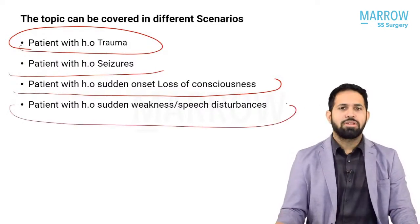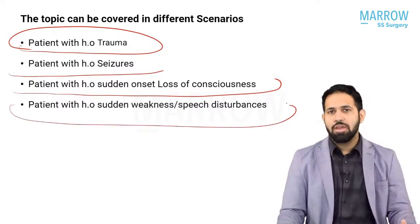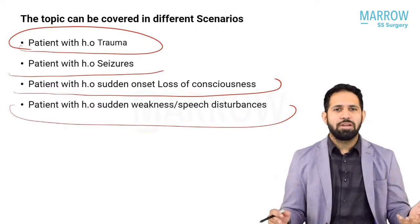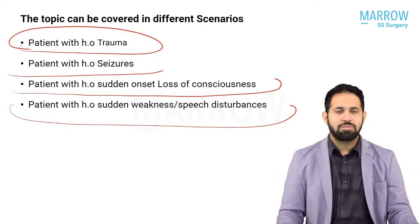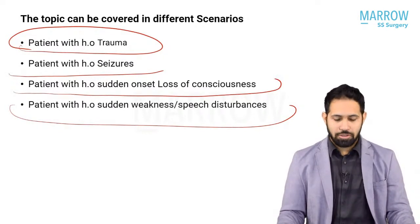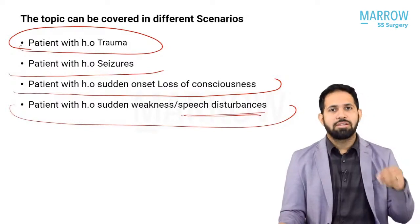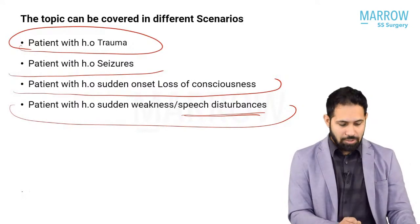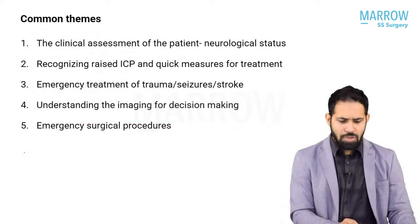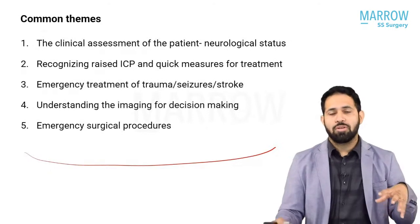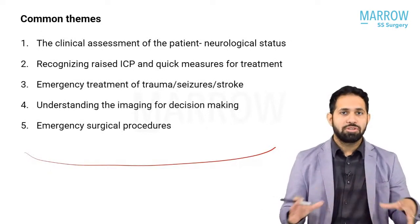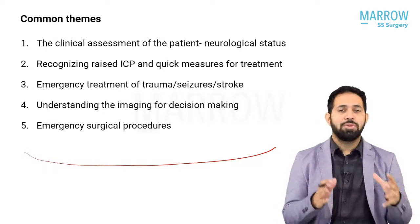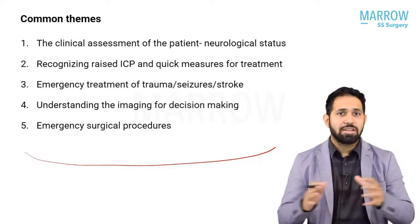Finally, you will have a patient with a classic history of what seems like a stroke: slurring of speech, weakness of one side of the body, speech disturbances, or global aphasia. The common theme among all these patients is what you do in the assessment and treatment of these patients as a whole.